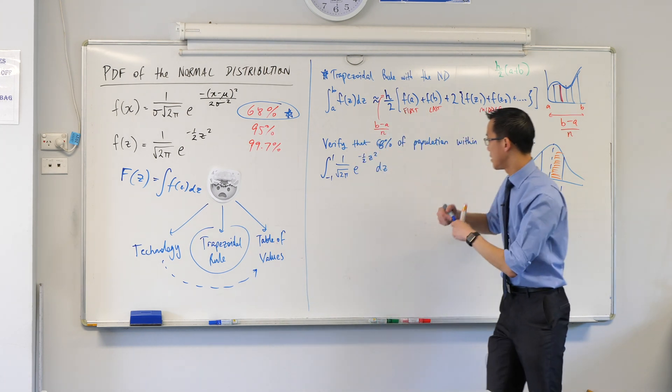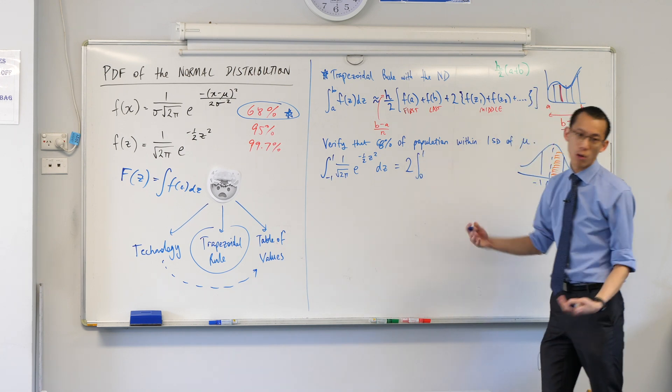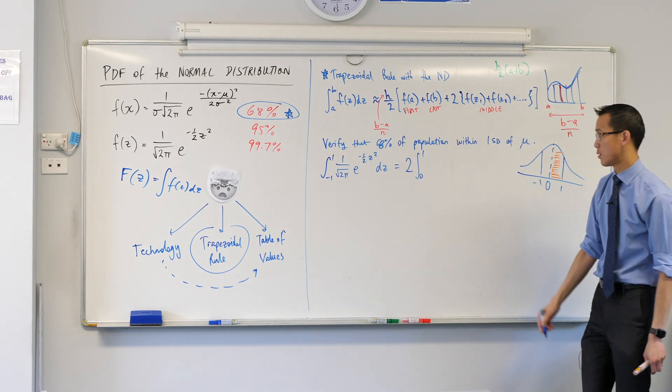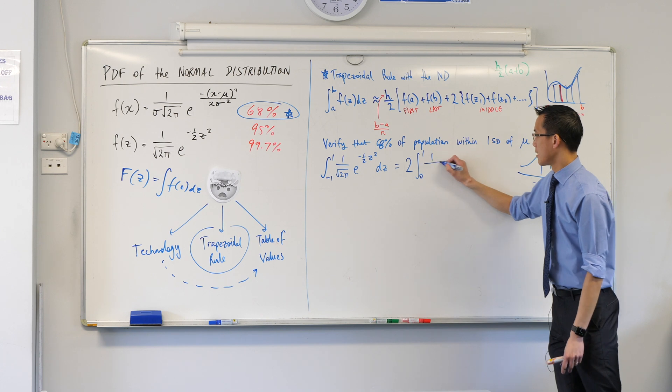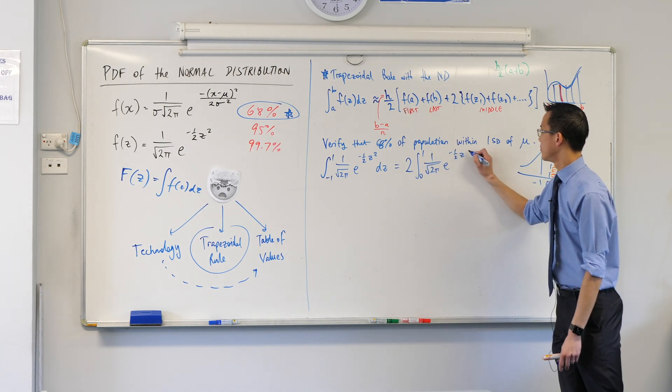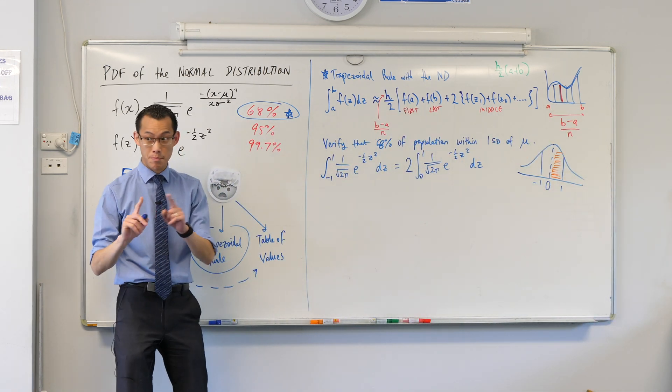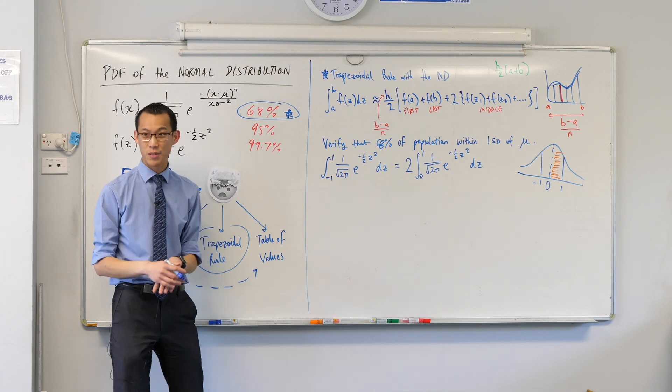So I'm going to write that down. This is equal to two lots of the same integral but from 0 to one instead of negative one to one. At this point I'm like, okay, this is better. I'm going from 0 to one instead of negative one to one.